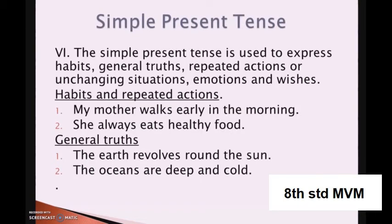Now let us come to the simple present tense. Tense means time. Present tense is used for actions which are happening now. Simple present tense is used to express habits, general truths, repeated actions or unchanging situations, emotions and wishes. Examples for habits and repeated actions: my mother walks early in the morning; she always eats healthy food. General truths: the earth revolves around the sun; the oceans are deep and cold.